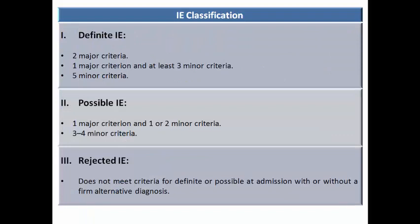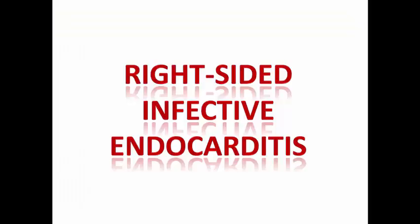We consider infective endocarditis to be definite if there are two major criteria, one major criterion and at least three minor criteria, or five minor criteria. Possible if there is just one major with one or two minor criteria, or three to four minor criteria. Rejected if it doesn't meet the criteria for definite or possible infective endocarditis at admission, with or without an alternative diagnosis.